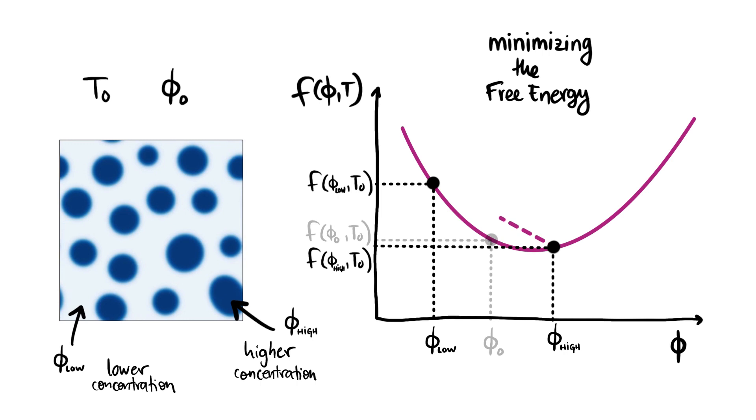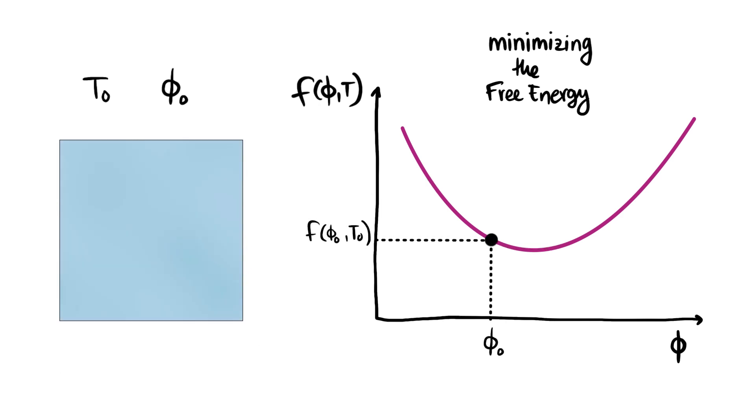We can use tie lines connecting these two hypothetical phases to clearly see how the free energy changes. So these high and low concentration regions make the free energy density of the whole system higher. Therefore, under these conditions the homogeneous state is favorable.